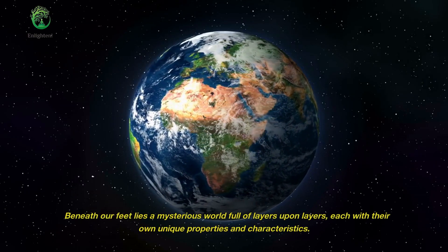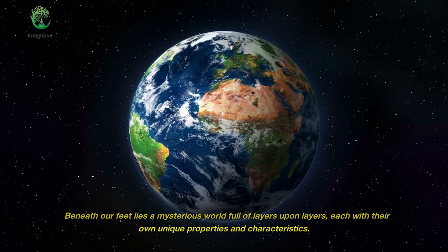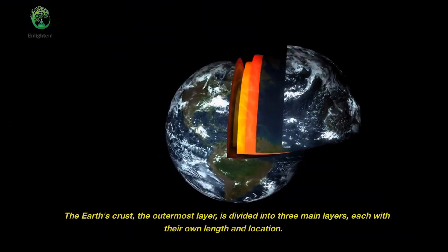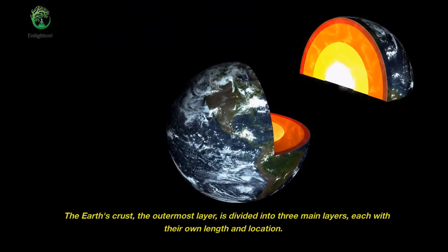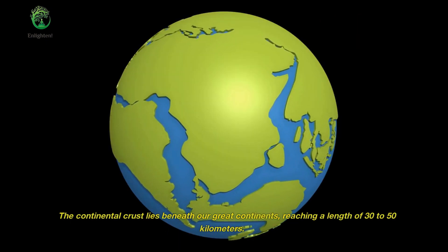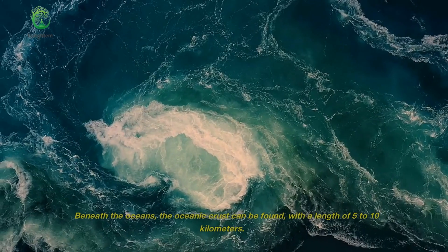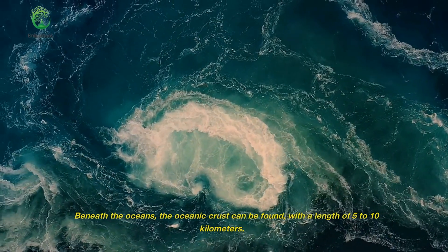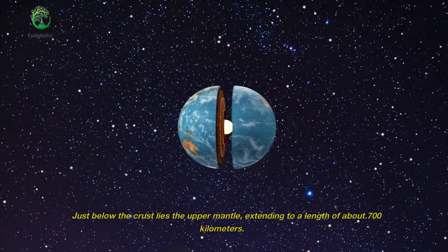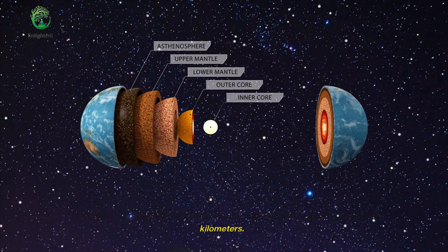Beneath our feet lies a mysterious world full of layers upon layers, each with their own unique properties and characteristics. The Earth's crust, the outermost layer, is divided into three main layers, each with their own length and location. The continental crust lies beneath our great continents, reaching a length of 30 to 50 kilometers. Beneath the oceans, the oceanic crust can be found, with a length of 5 to 10 kilometers. Just below the crust lies the upper mantle, extending to a length of about 700 kilometers.